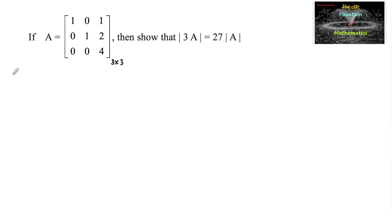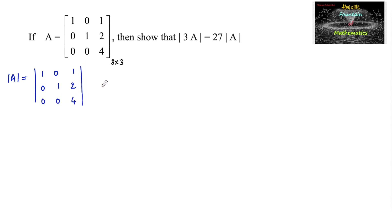Let's find the determinant of matrix A. The determinant of A is the determinant of [1 0 1; 0 1 2; 0 0 4]. We know that the determinant of a 3×3 matrix can be found using any row or any column, and we should choose the row or column with more zeros.